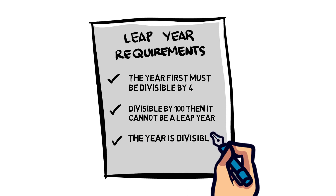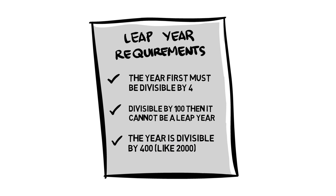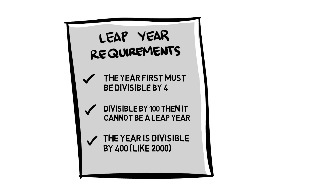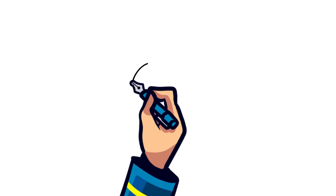A very special leap year was 2000, as it was one of the first instances of a year not only being divisible by 100 but also by 400.